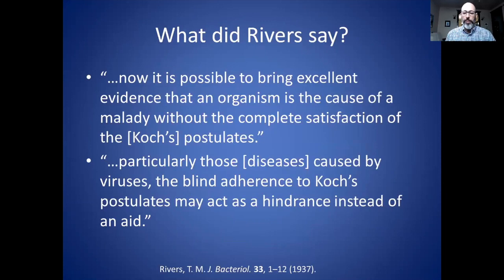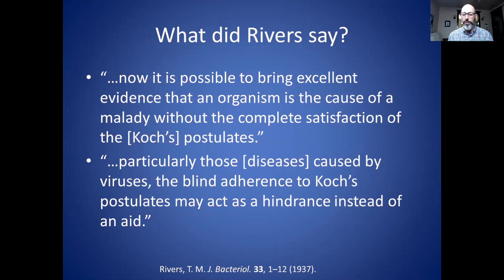I went and looked at Rivers' article from 1937 where he laid out these six criteria. The first quote: 'Now it is possible to bring excellent evidence that an organism is the cause of a malady without complete satisfaction of Koch's postulates.' He's saying you can skip steps not included in his criteria and still prove a virus causes disease. Next: 'particularly those diseases caused by viruses, the blind adherence to Koch's postulates may act as a hindrance instead of an aid.' This indicates he may have been looking for a shortcut, making it a little easier to prove a virus is the cause of disease.